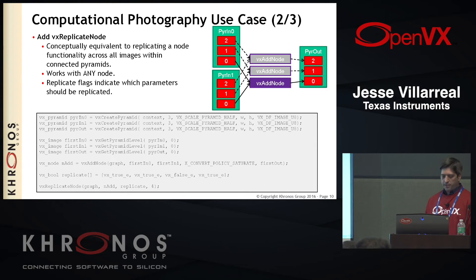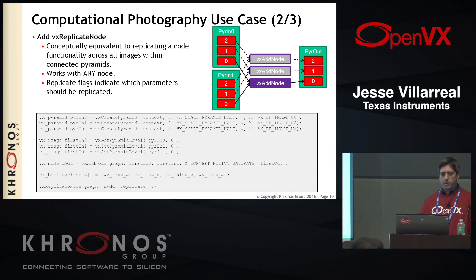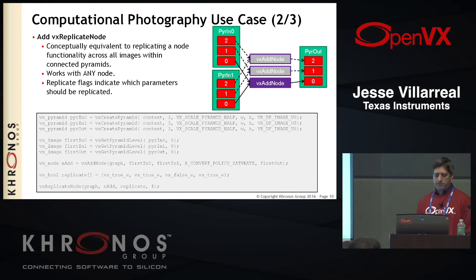Stepping through the code, you create your three pyramids, then you call get pyramid level on each of these pyramids passing level zero to get that first image level. Now you've got the three references and you create your node — the add node function. Instead of doing that in a for loop for however many levels you have, now we have VX replicate node that does that for you. This functionality can happen on any node — it's not just for the adds and the multiplies. Any node that you have, you can conceptually do this.